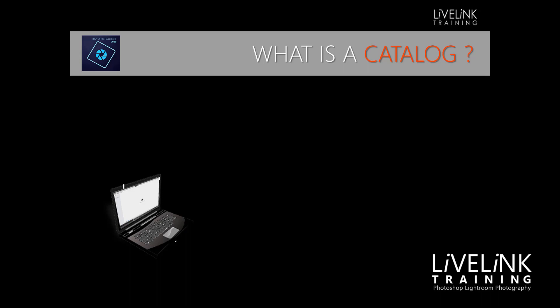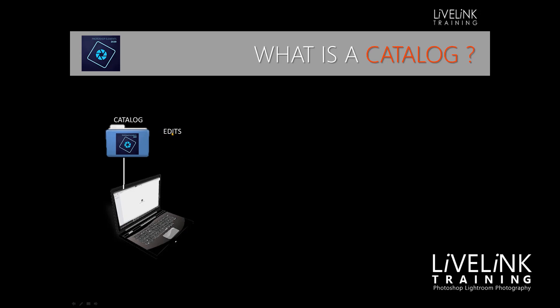The images are not hoovered up and stored inside Photoshop Elements. When an image is transferred onto a computer, the operating system — be it Windows or Mac — gives it an address, and this is the key part to understand. Once we've got our computer up and running, we install Photoshop Elements, and Photoshop Elements creates a folder called the catalog folder. Now all the edits you do go into the catalog, along with any metadata from your camera — your f-stop, your shutter speed, all that kind of stuff.